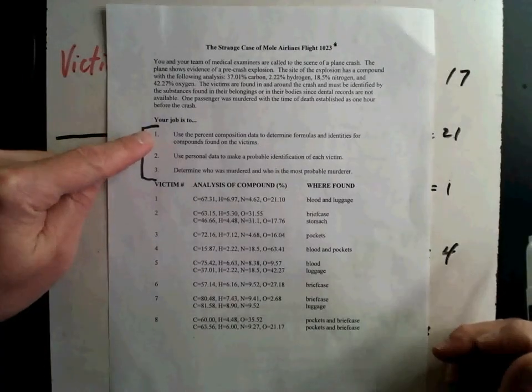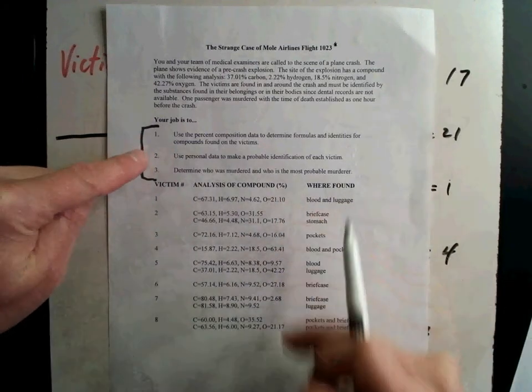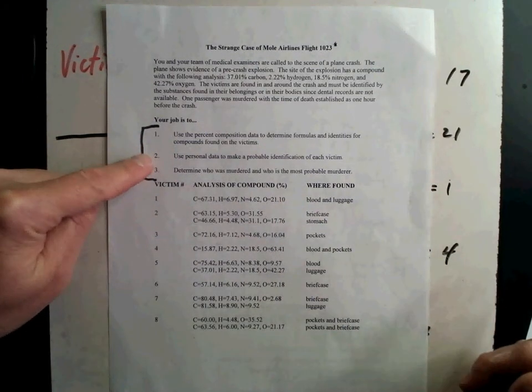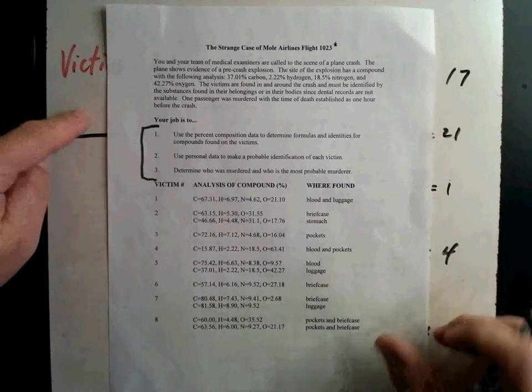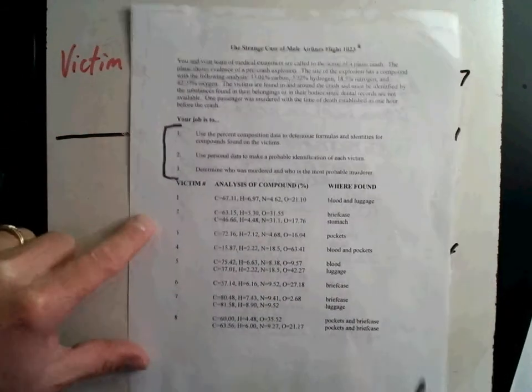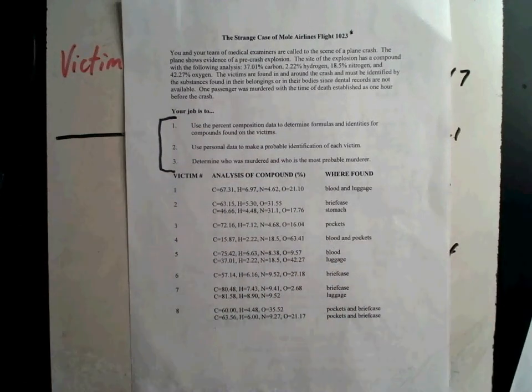So you had three jobs, remember? Use the percent data to figure out the compounds. I did. Number two, and I'd have to do it for all of them. Number two, personal data to figure out who each victim is. So eventually I'll figure out which victim, each name, and then from what you see, who was murdered and who the probable murderer was. You're practicing empirical formulas and doing it as a murder mystery.